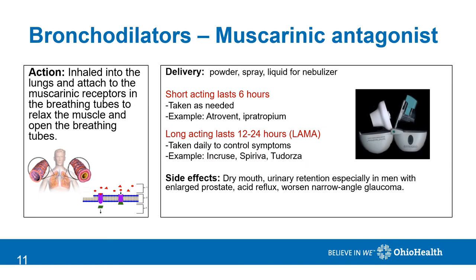Another common bronchodilator are the muscarinic antagonists. They attach to a different receptor in the airways, and the medicine is taken through the receptor to the muscle layer, causing relaxation of the breathing tubes so the air can flow more normally. These come in both powder, spray, or liquid forms, and also have short-acting and long-acting formulas. The short-acting lasts about six hours and is used as needed. Examples include Atrovent or Ipratropium.